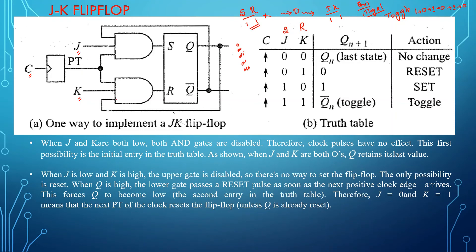Let us study how the JK flip-flop works in detail. When J and K are both 0, both AND gates are disabled — 0 into anything is 0. So S is 0 and R is 0. When S and R are both 0, even if clock pulses are given there is no change in the output — it remains the same as the previous state.